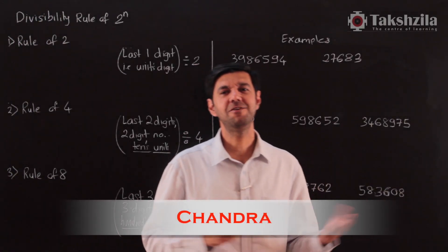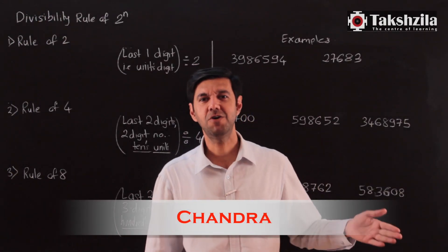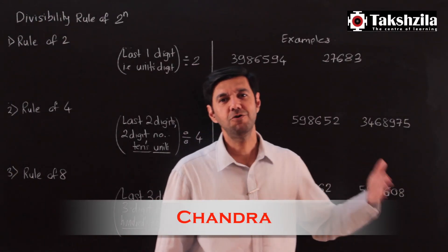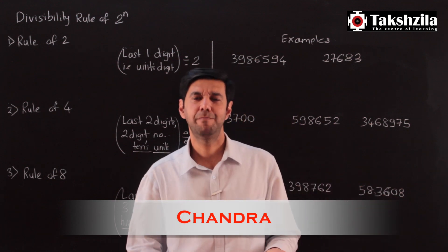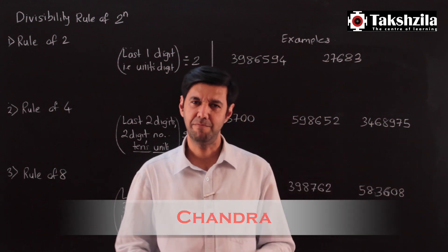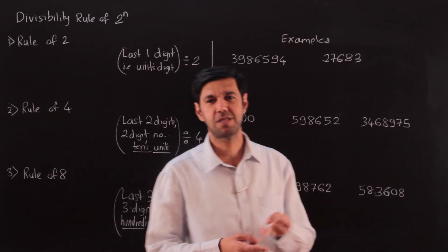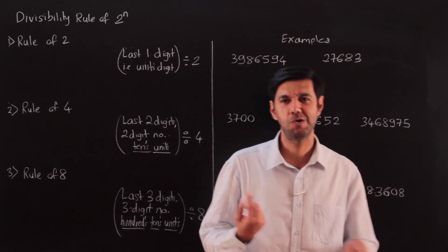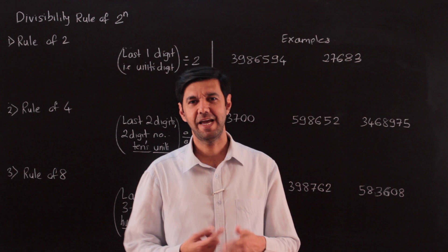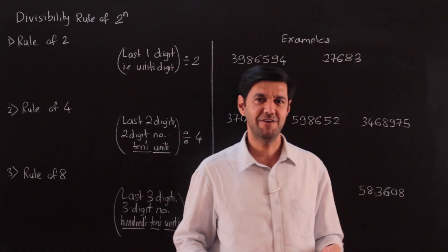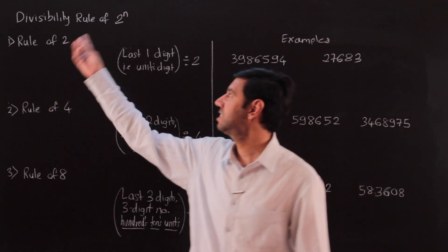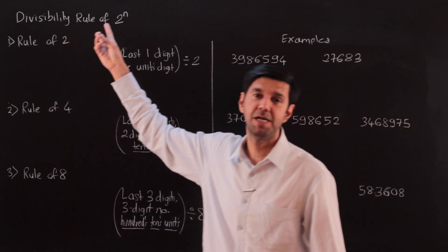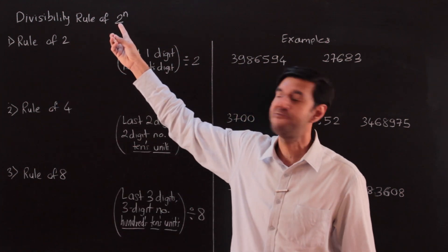In this lesson we will be studying how to check if a number is divisible by certain numbers like 2, 3, 4, 6, 8, 9, and 11. These are the major divisibility rules. Let's start with divisibility rules for powers of 2.